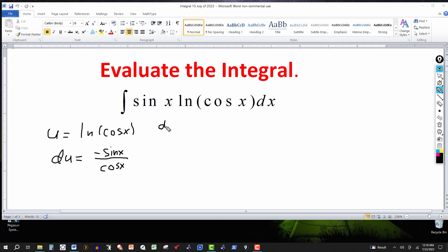And then dv equals sine of x dx. So integrating this, the left side gives v, and the integral of sine of x with respect to x gives minus cosine of x.